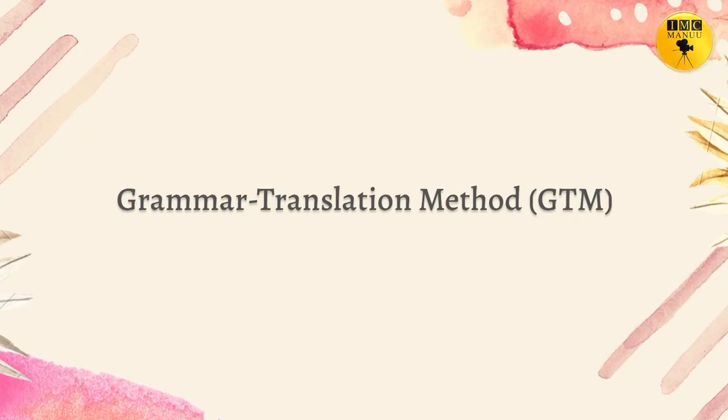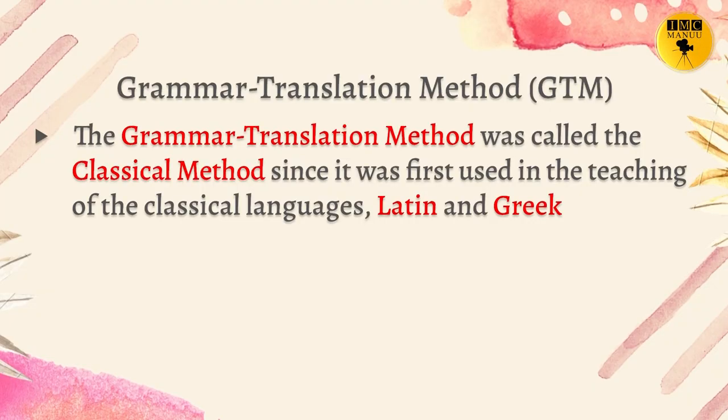So far we talked about a brief introduction to method. Let me now talk about what the methods are. The first and foremost method is the Grammar Translation Method, which can also be called the classical method. It was called the classical method since it was first used in the teaching of classical languages — Latin and Greek — alongside Sanskrit, Italian and other classical languages. That was the foundation for English language teaching, which is why the Grammar Translation Method is treated as one of the oldest methods.